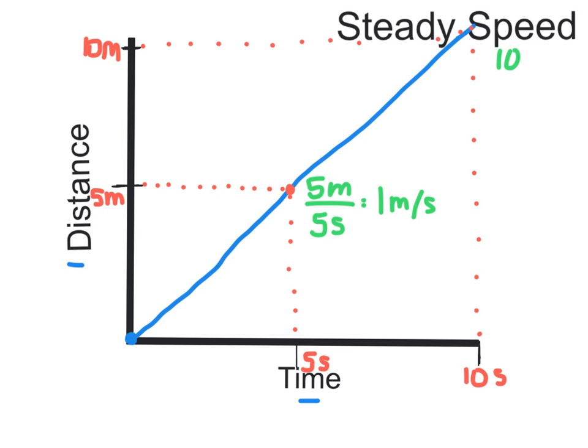Same with up here, ten meters in ten seconds equals one meter per second. So you can see that our speed is steady. We're traveling one meter in one second, and it stays consistent across the entire ten seconds.